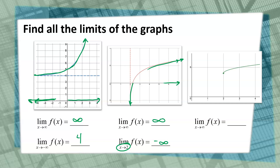This last one — if you notice, there's a solid point there. That's an end point. So we cannot say 'as x approaches negative infinity,' and we wouldn't even say 'as x approaches 2' because it just stops when x gets to 2. So we would only have one limit here. An easy way to remember this: if there's an arrow, there's going to be a limit. If there's not an arrow, there's not going to be a limit. There's an arrow only on the right side here, so that would be as x approaches infinity. The y-values are getting larger and larger, approaching positive infinity.